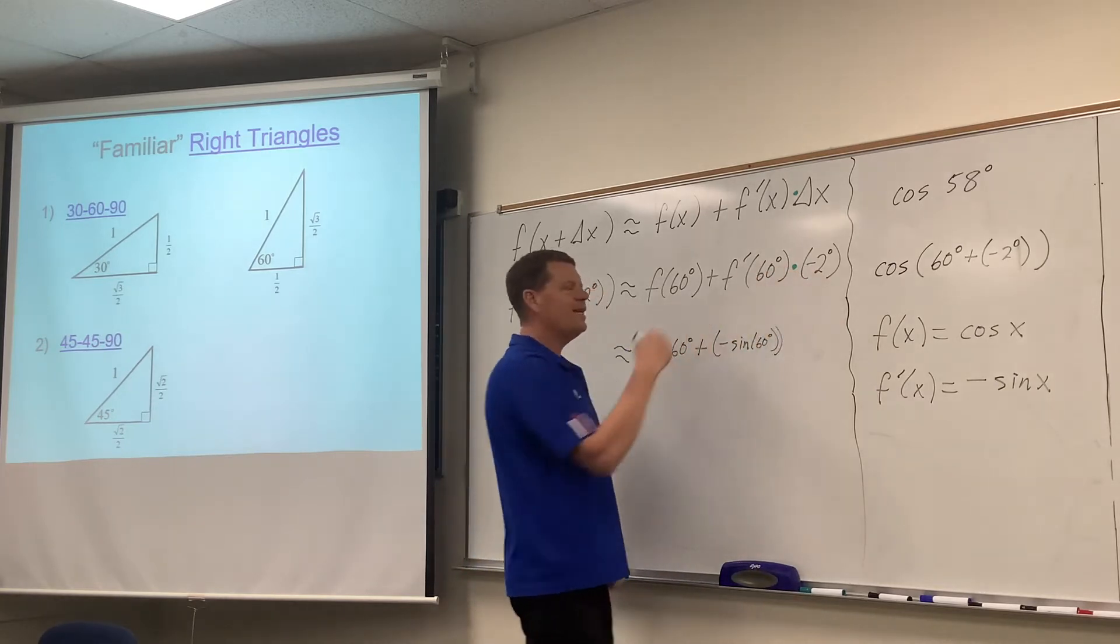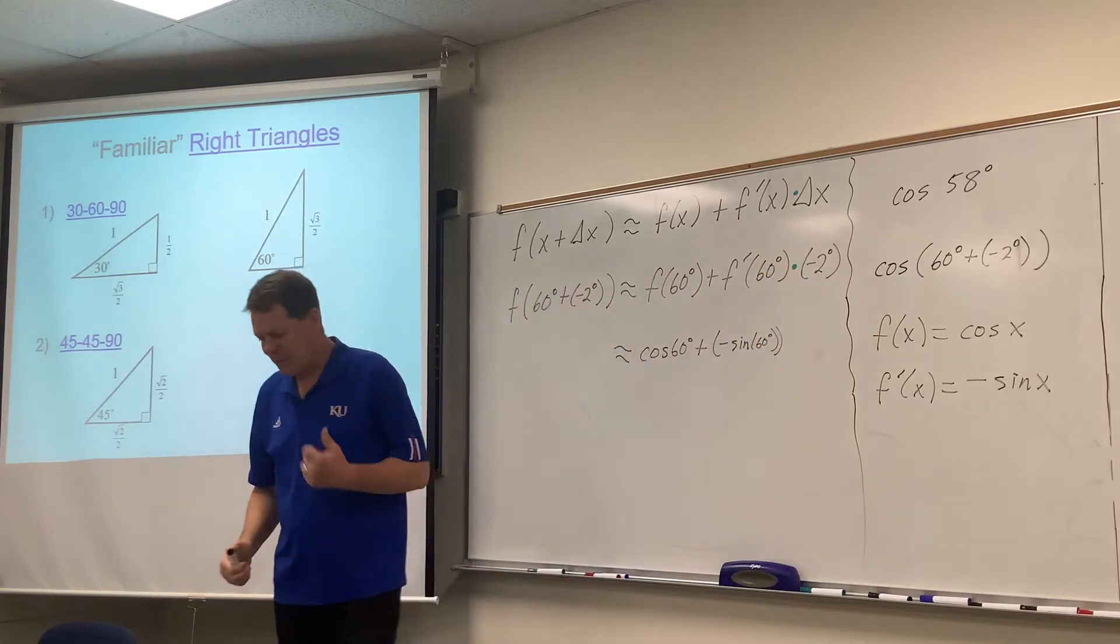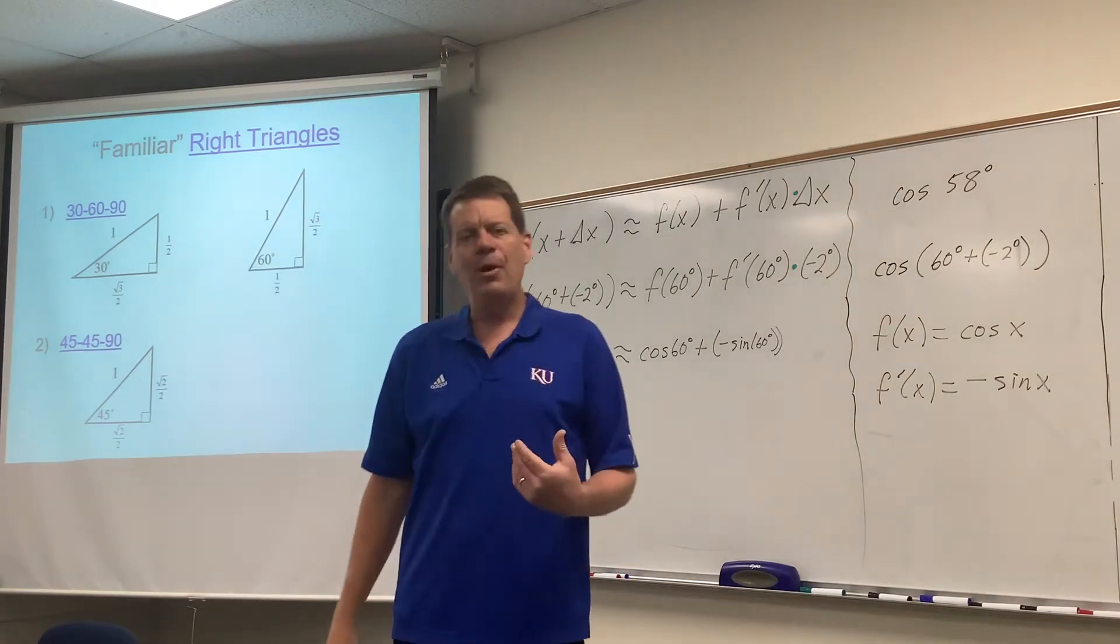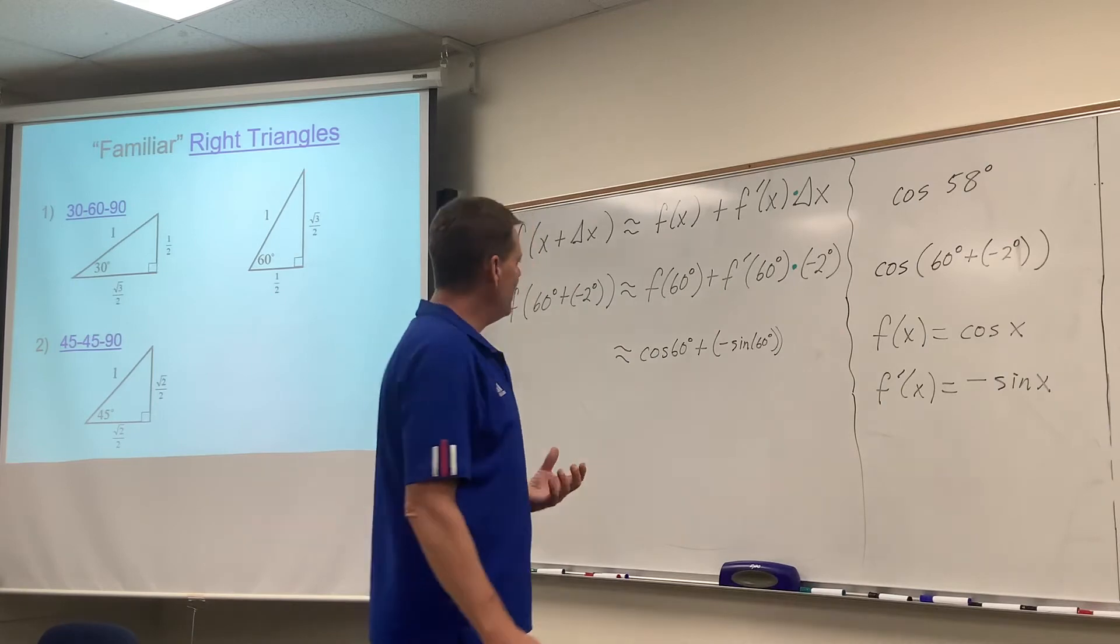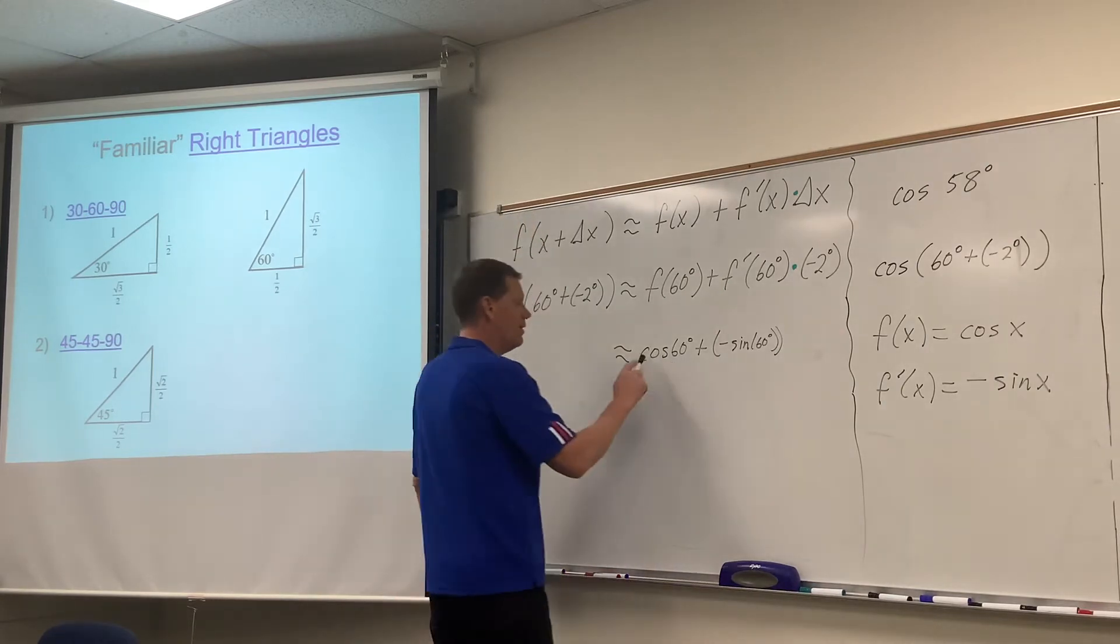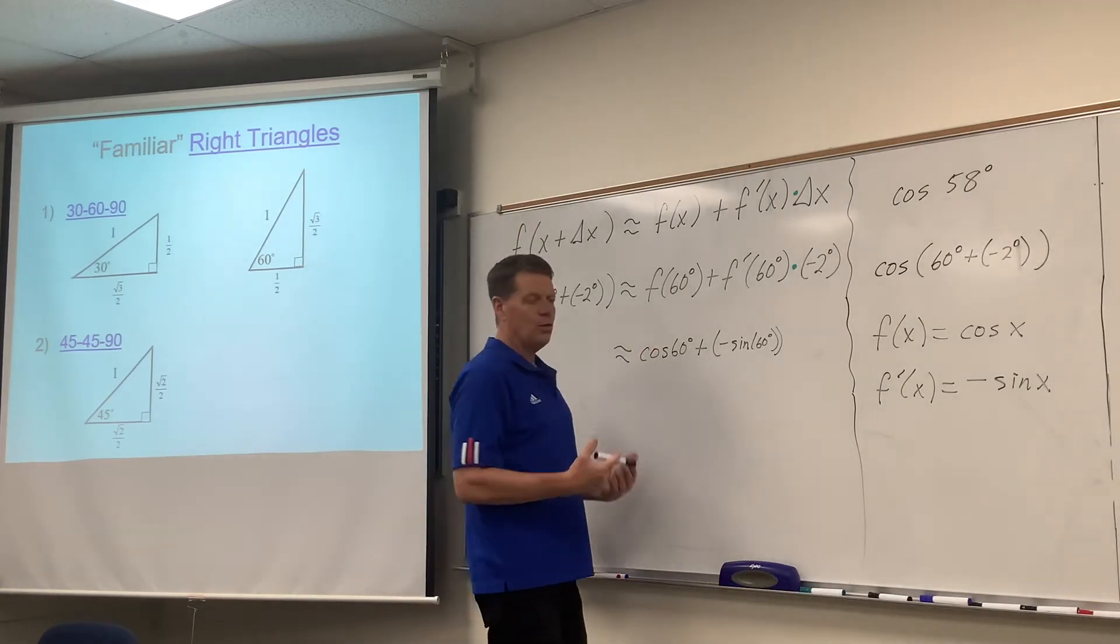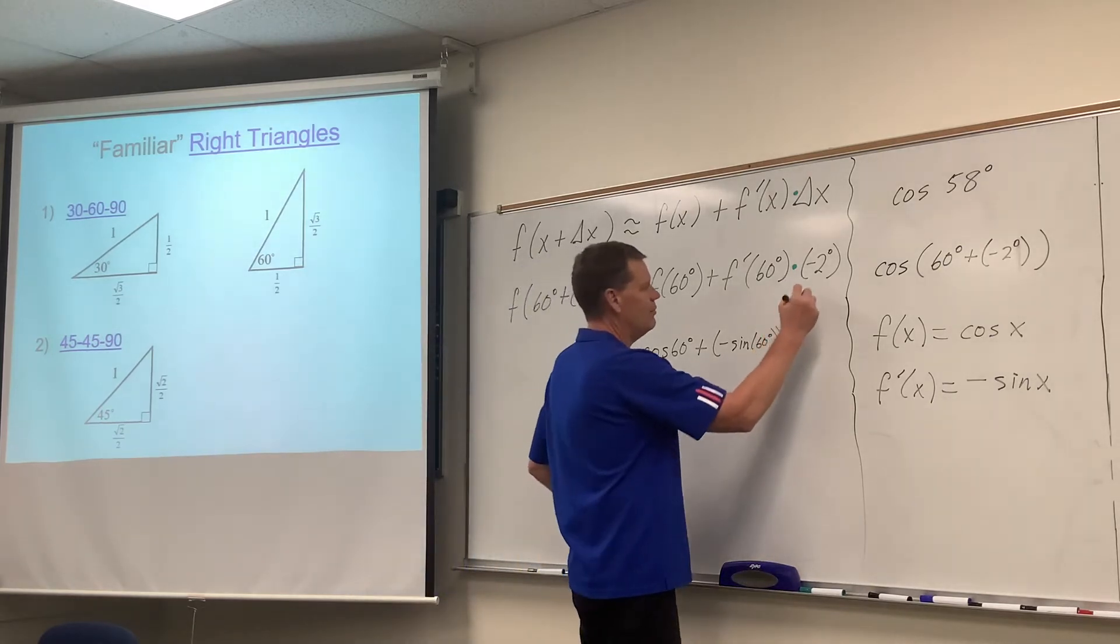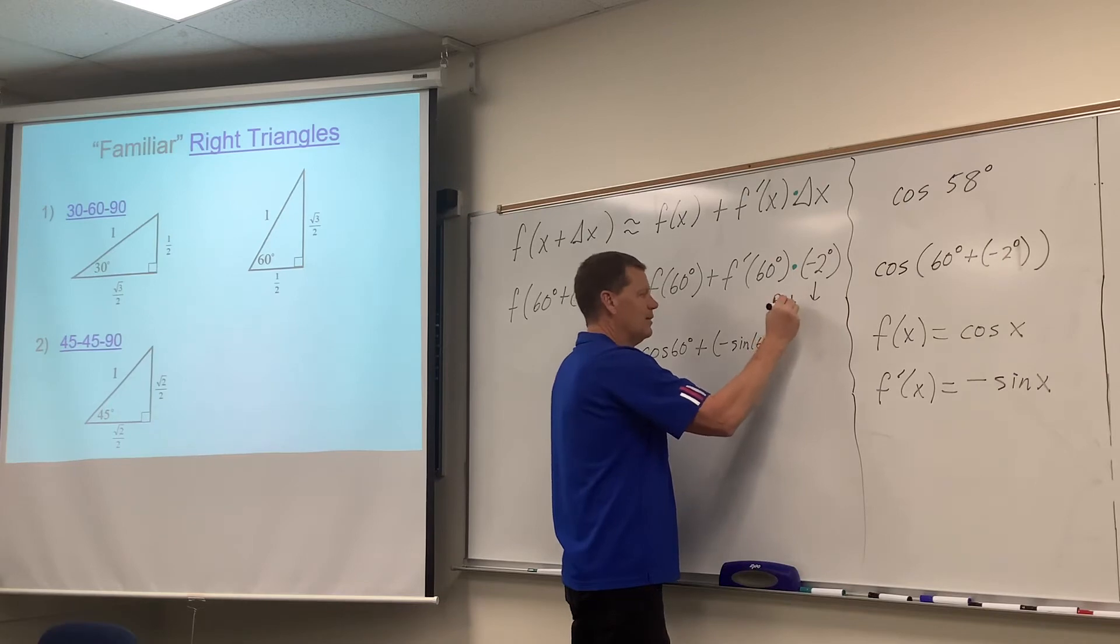Now here's the deal though. The negative 2 degrees, and this is something that's very easy to mess up. That multiplier there, we can figure out the cosine of 60, we can figure out the cosine of the corresponding radian measurement, but it is imperative on that negative 2 degrees that we change that into radians.